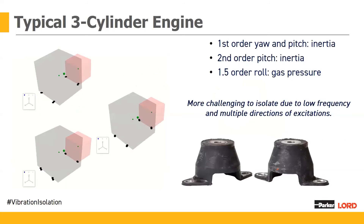Now that we understand the allowable motion, we look at the primary disturbances from the engine package. We'll start with the three most common engine packages. The three-cylinder engine tends to be the most challenging to isolate due to the complexity of low-frequency, multi-directional excitations. The most common disturbances for a typical three-cylinder engine are pitch and yaw — the inertial imbalances — as well as second order roll gas plungers. We treat each one of those modes separately to ensure the isolation path through each is properly addressed.